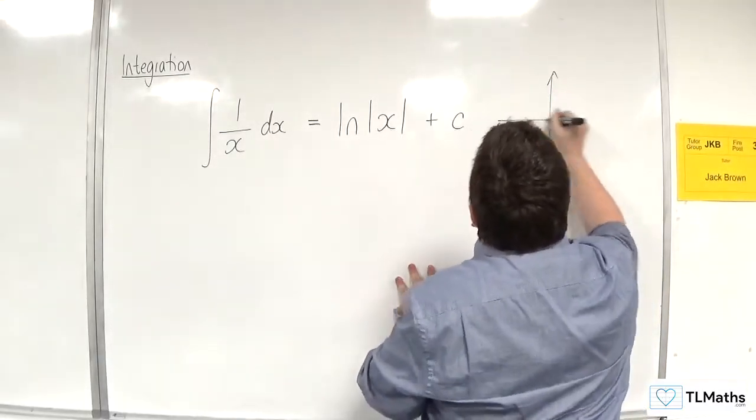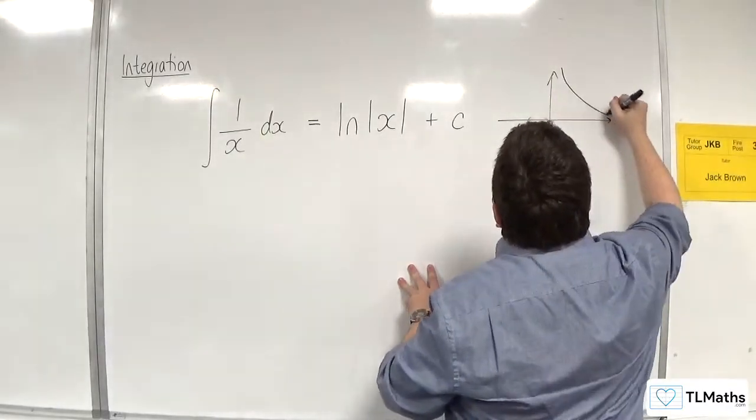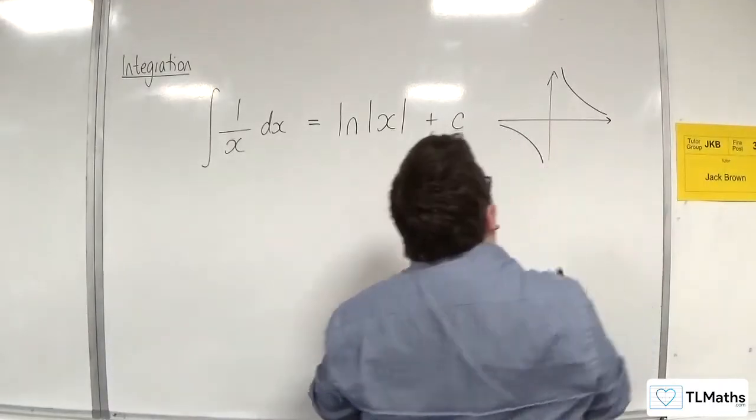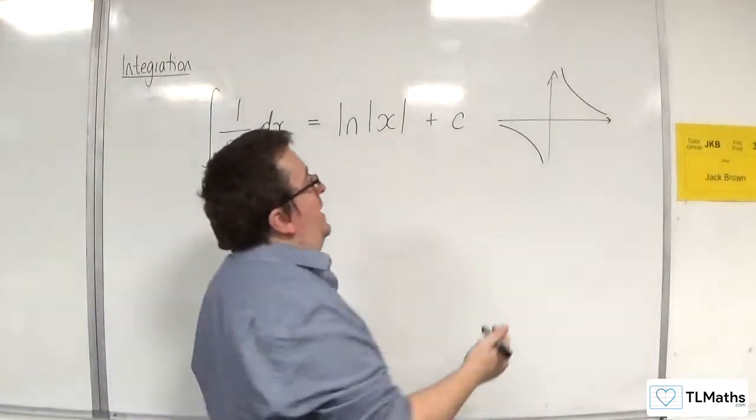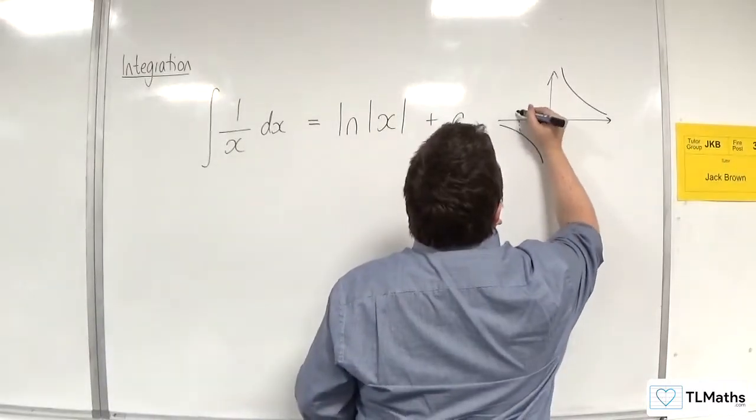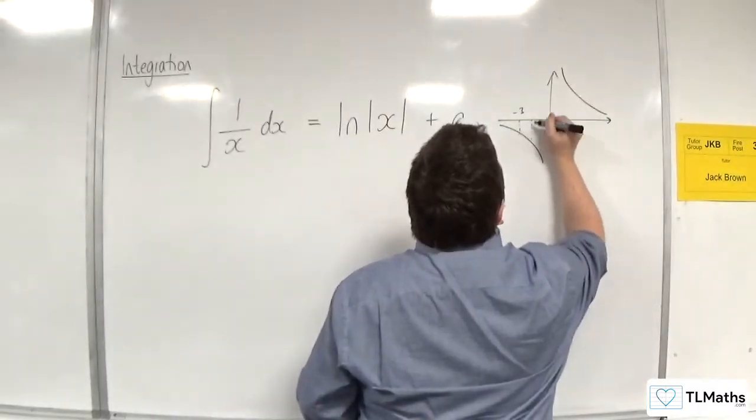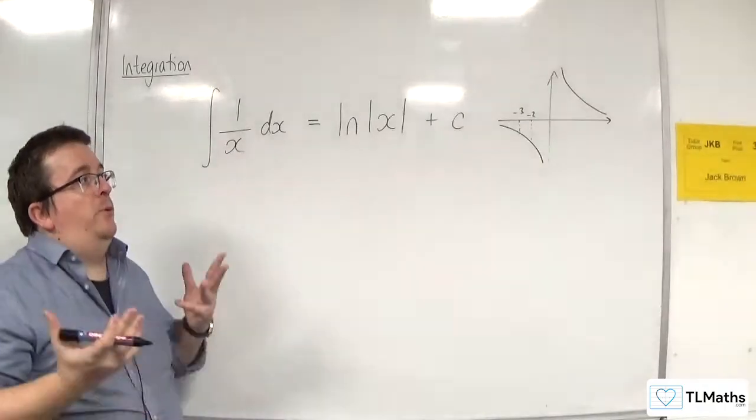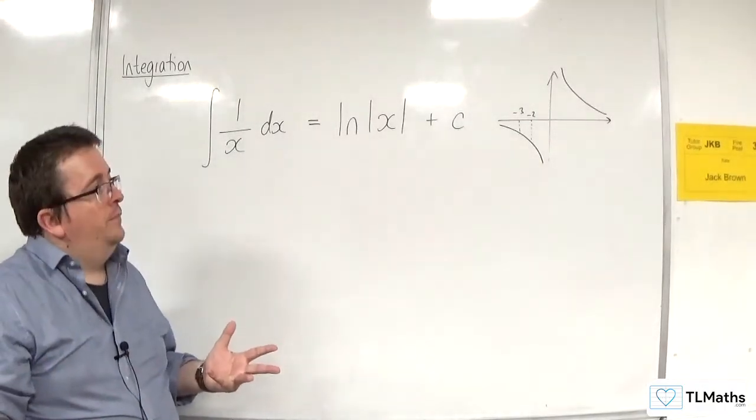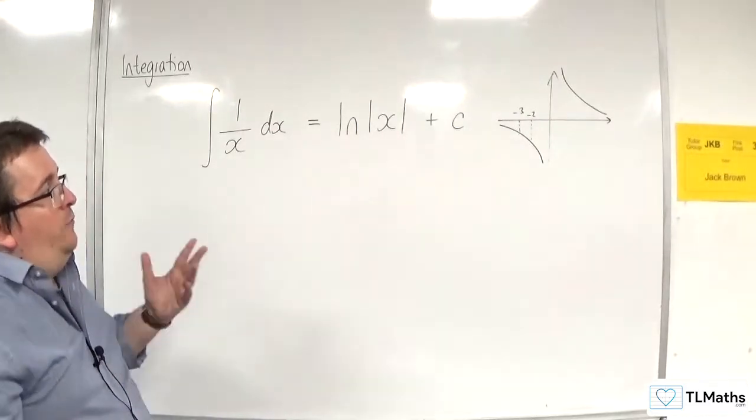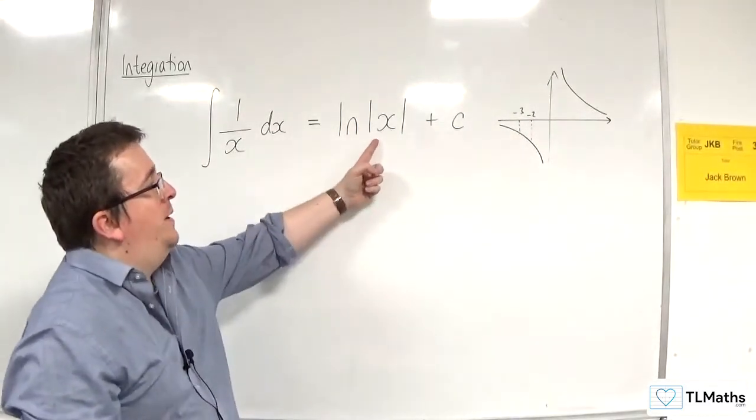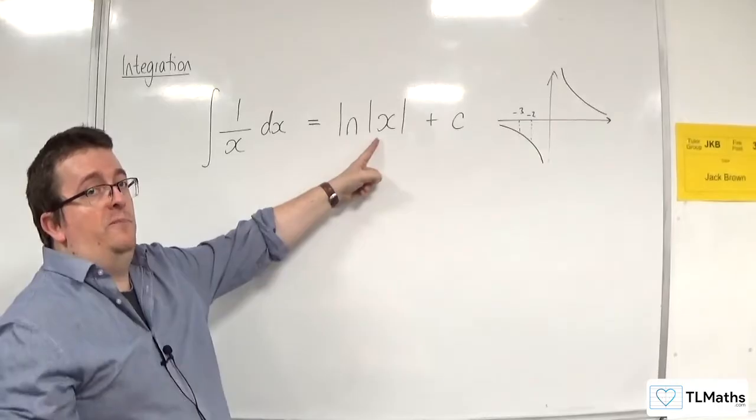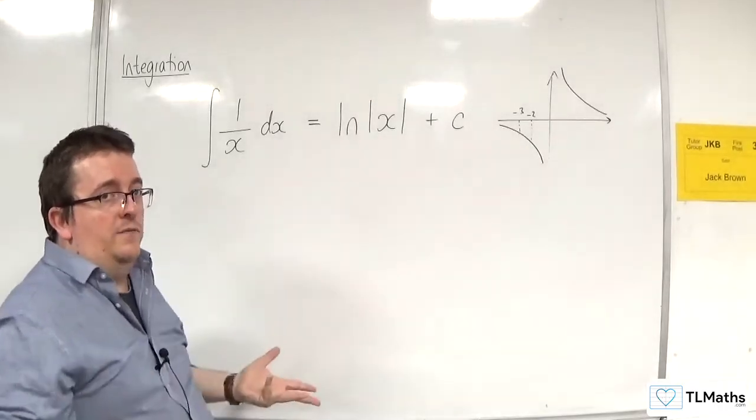So the curve 1 over x looks like this. So if you were to evaluate it between minus 3 and minus 2, say, we should be able to evaluate that integral. But if we just have log of x, we're going to substitute in log, we're going to have log of minus 3, we're going to have log of minus 2, which we can't evaluate.